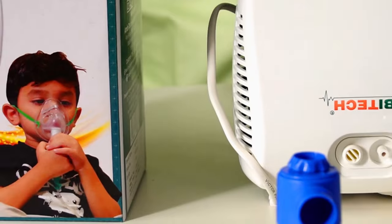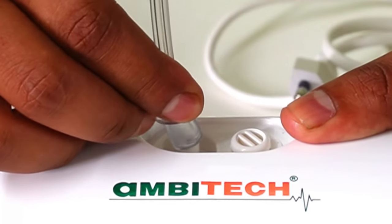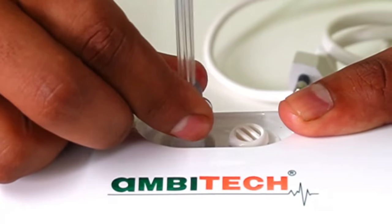Now that we know all the contents, let's look at how to set up the Ambitek Nebulizer. First, plug one end of the air tube onto the air tube connector, which you will find on the compressor machine.